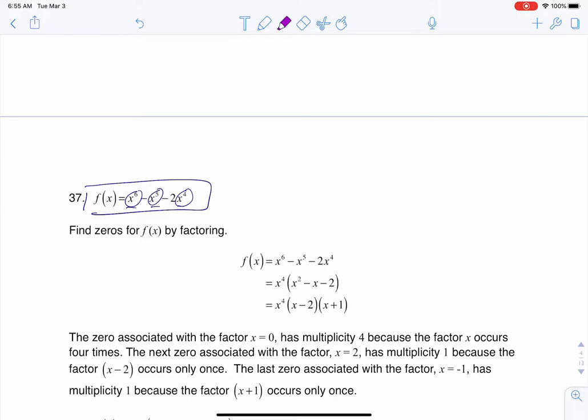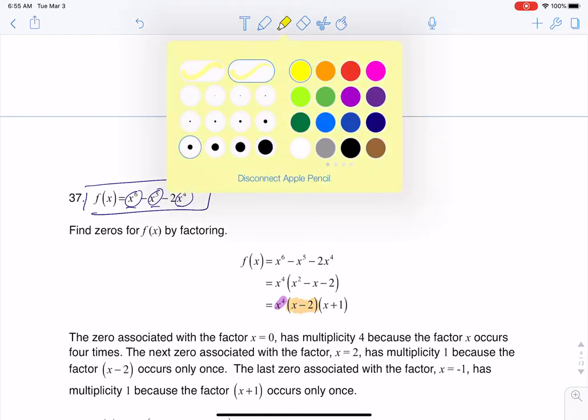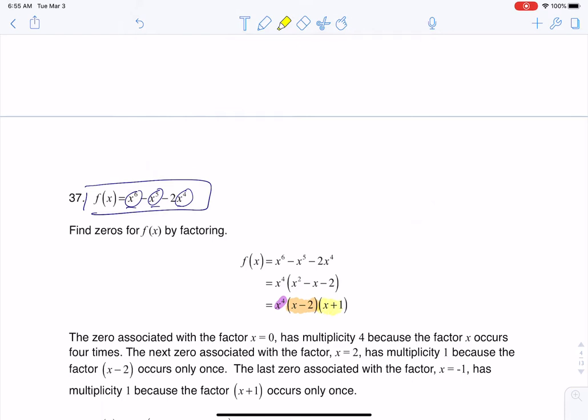So now if I start to pick this apart, let me go to my highlighter. I've got three different factors that I'm going to account for. So I've got the x to the fourth, I've got x minus 2, and I've got x plus 1.